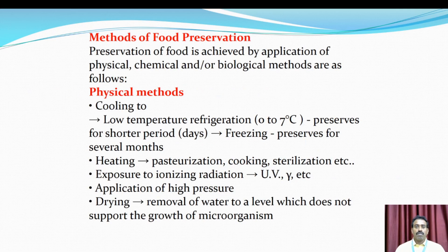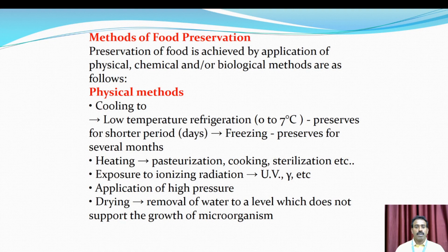The methods of food preservation — the preservation of food is achieved by application of physical, chemical, or biological methods. The first is the physical method. Cooling to low temperature: refrigeration at 0 to 7 degrees Celsius preserves food for a short period. Freezing preserves food for several months.